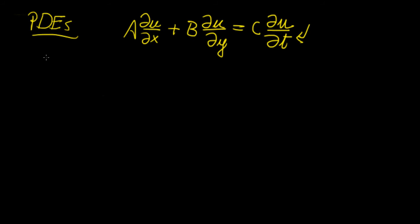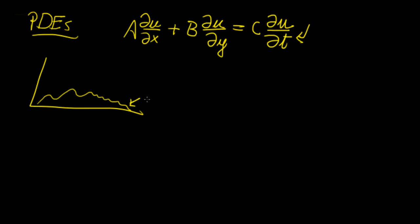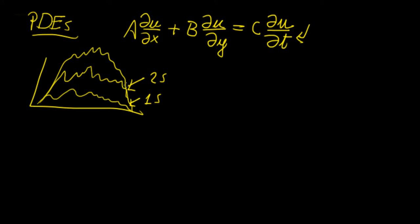An equation like this will give you a solution that actually changes with each step of time. So maybe you would have a solution at one second, but then you might have another solution in the following time step at two seconds, and it would keep changing with respect to time. This is what we would call a time-varying partial differential equation.